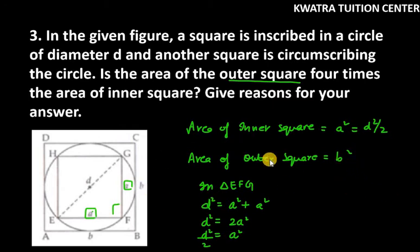Now, let's talk about b². How can we write this in d²? You can see here that this circle's diameter is d. This means that b and d will be completely same. The area of the outer square will be b², and we can write it as d² as well, because b equals d.